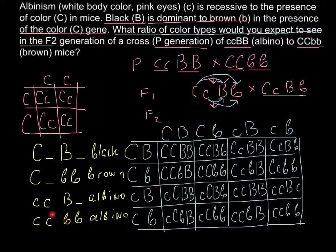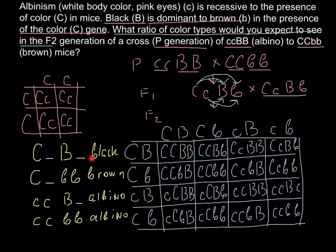The fourth possible phenotype is small c small c small b small b — this also would be albino, because we have absence of color and homozygous recessive condition for the black locus. If capital C were present here, this would be brown. So these are the four possible genotype groupings. Capital C can be capital C or small c in certain positions, but as long as at least one capital C and one capital B are present, that gives black.